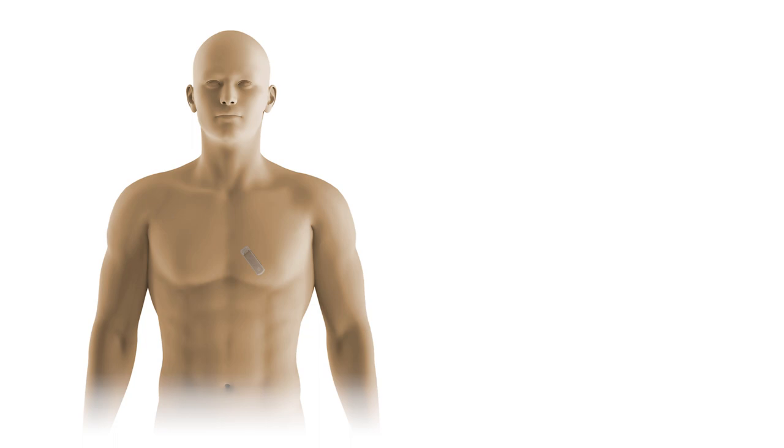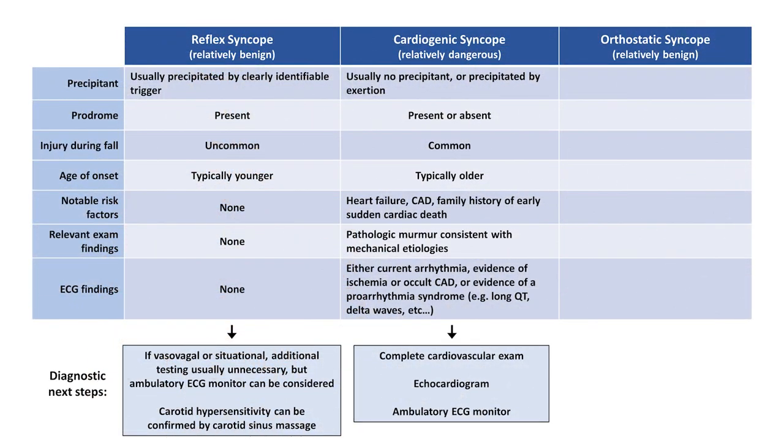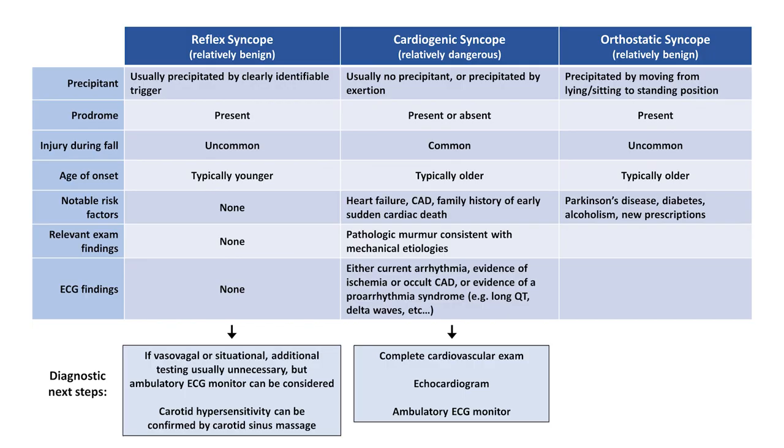If the patient then has another syncopal event, the device can be interrogated afterwards to see definitively if an arrhythmia was responsible. The last syncope category is orthostatic syncope. By definition, orthostatic syncope is precipitated by moving from lying or sitting to the standing position. A prodrome is almost always present and injury is uncommon. Patients tend to be older and associated risk factors include Parkinson's disease, diabetes, alcoholism, and new medication prescriptions, particularly for alpha blockers, SSRIs, and antipsychotics. As you might expect, these patients have orthostatic hypotension on exam. Keep in mind that being orthostatic does not necessarily mean that the person's syncope was from the orthostasis, since it's common for older patients with heart disease and on lots of cardiovascular medications to be incidentally orthostatic. Orthostatic hypotension has no relevant ECG findings.